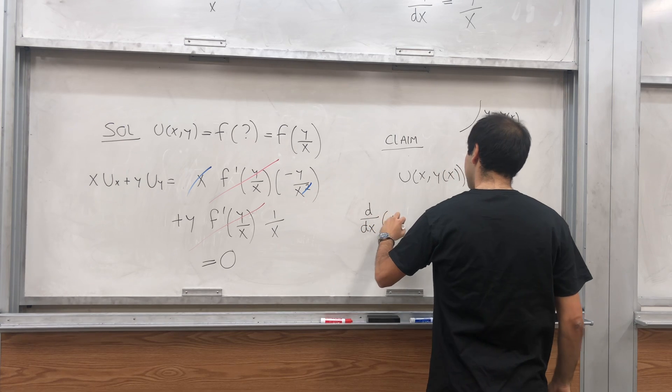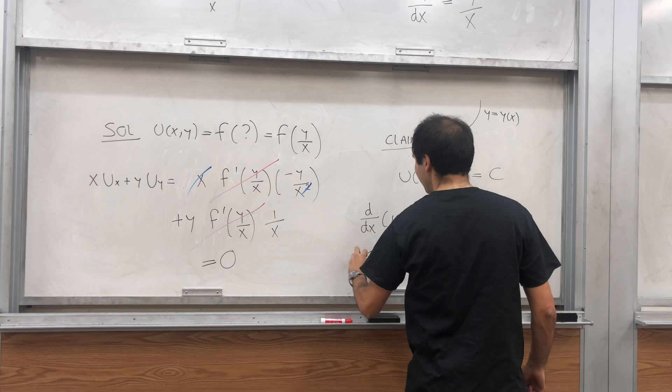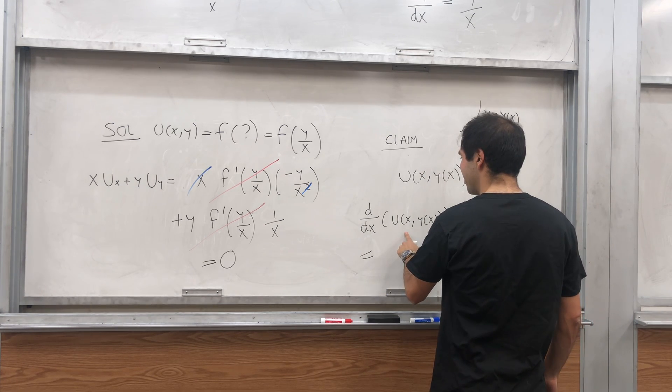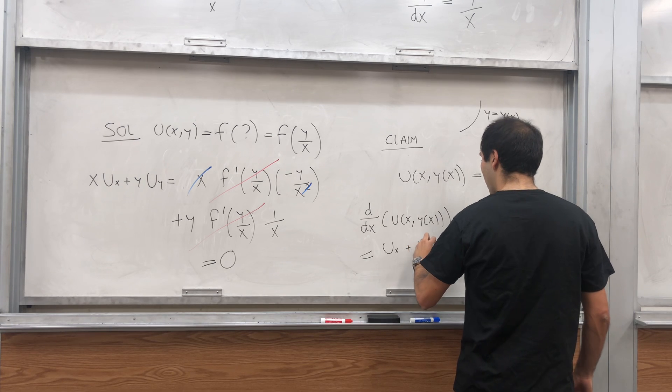So d over dx, u of x, y of x. Yeah, there is a little bit of abuse of notation, but not too much. So that becomes u_x plus u_y, and then the derivative of this, dy over dx.